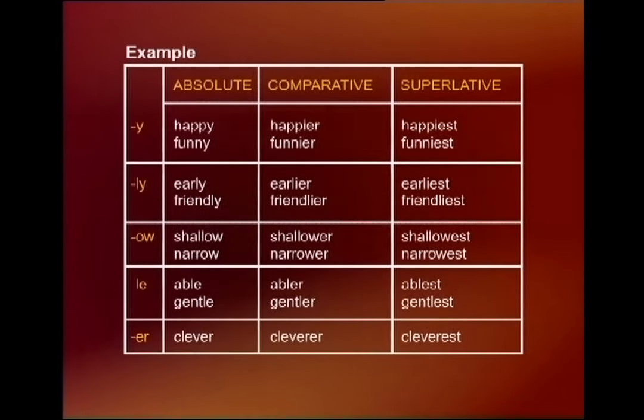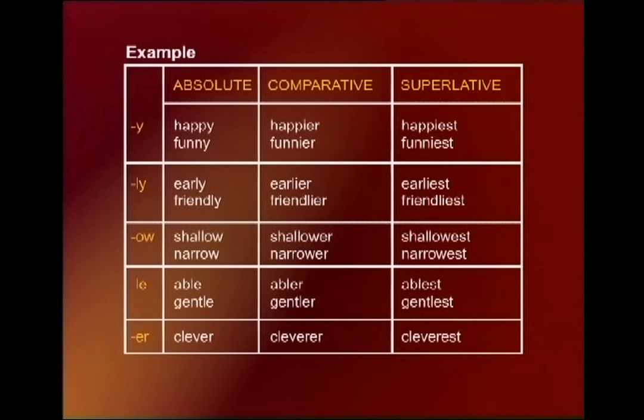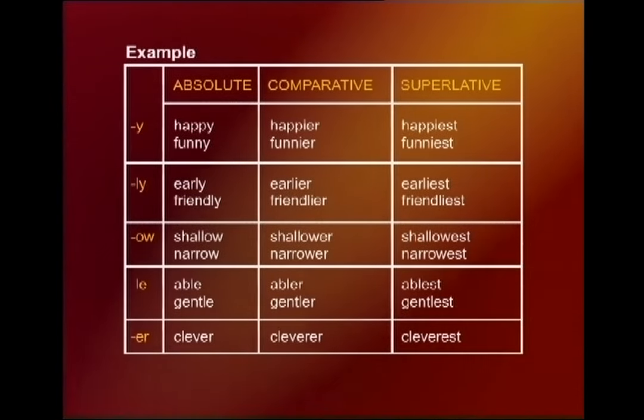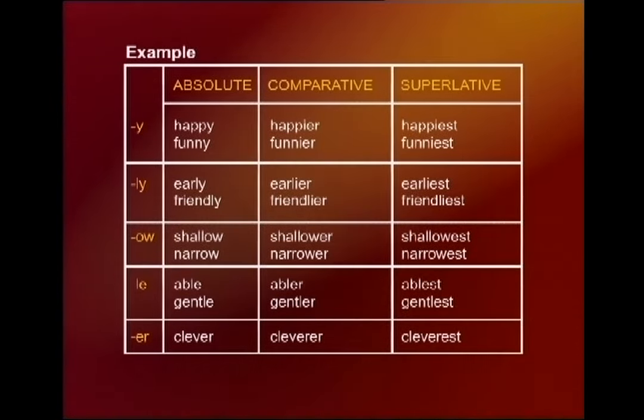Those ending in -ow: 'shallow,' 'shallower,' 'shallowest'; 'narrow,' 'narrower,' 'narrowest.' Those ending in -le: 'able,' 'abler,' 'ablest'; 'gentle,' 'gentler,' 'gentlest.' And those ending in -er: 'clever,' 'cleverer,' 'cleverest.'